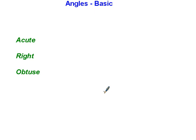Now we're going to learn basic things about angles. First of all, an acute angle is smaller than a right angle. It's more closed than a right angle.